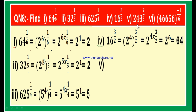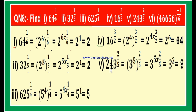Fifth part: 243 to the power 2 by 5. Resolving 243 into prime factors: 243 is 3 into 81, 81 is 3 into 27, 27 is 3 into 9, and 9 is 3 into 3. So 243 equals 3 power 5. Therefore 3 power 5 whole power 2 by 5 equals 3 to the power of 5 into 2 by 5, which is 3 squared, equal to 9.